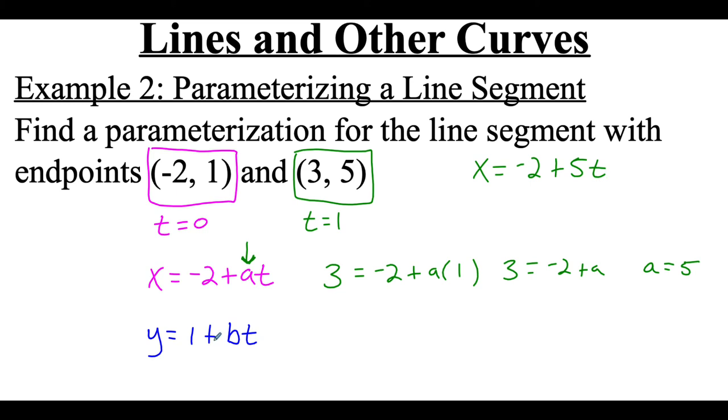Now I can do something similar with my y values. The y value from the second point is 5 so I'm going to fill that in for y and that's equal to 1 plus b times 1 since we're assuming this happens at a t value of 1. Well b times 1 is just b so we get 5 equals 1 plus b subtracting this 1 over and we get a b value of 4. So I can then take that b value of 4 and plug that into my y equation so I get y equals 1 plus 4t.